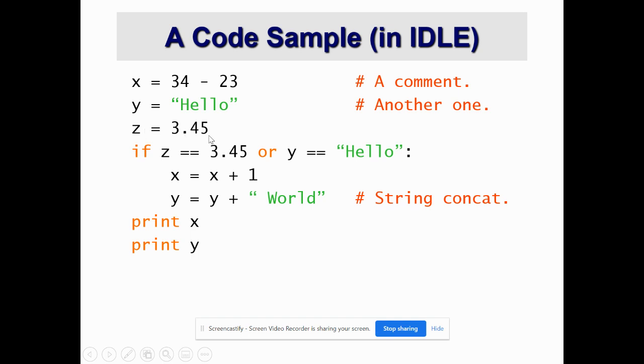Z is equal to 3.45. It contains a decimal point. So, it is called as a float. First one is integer, second one is string and the third one is float.